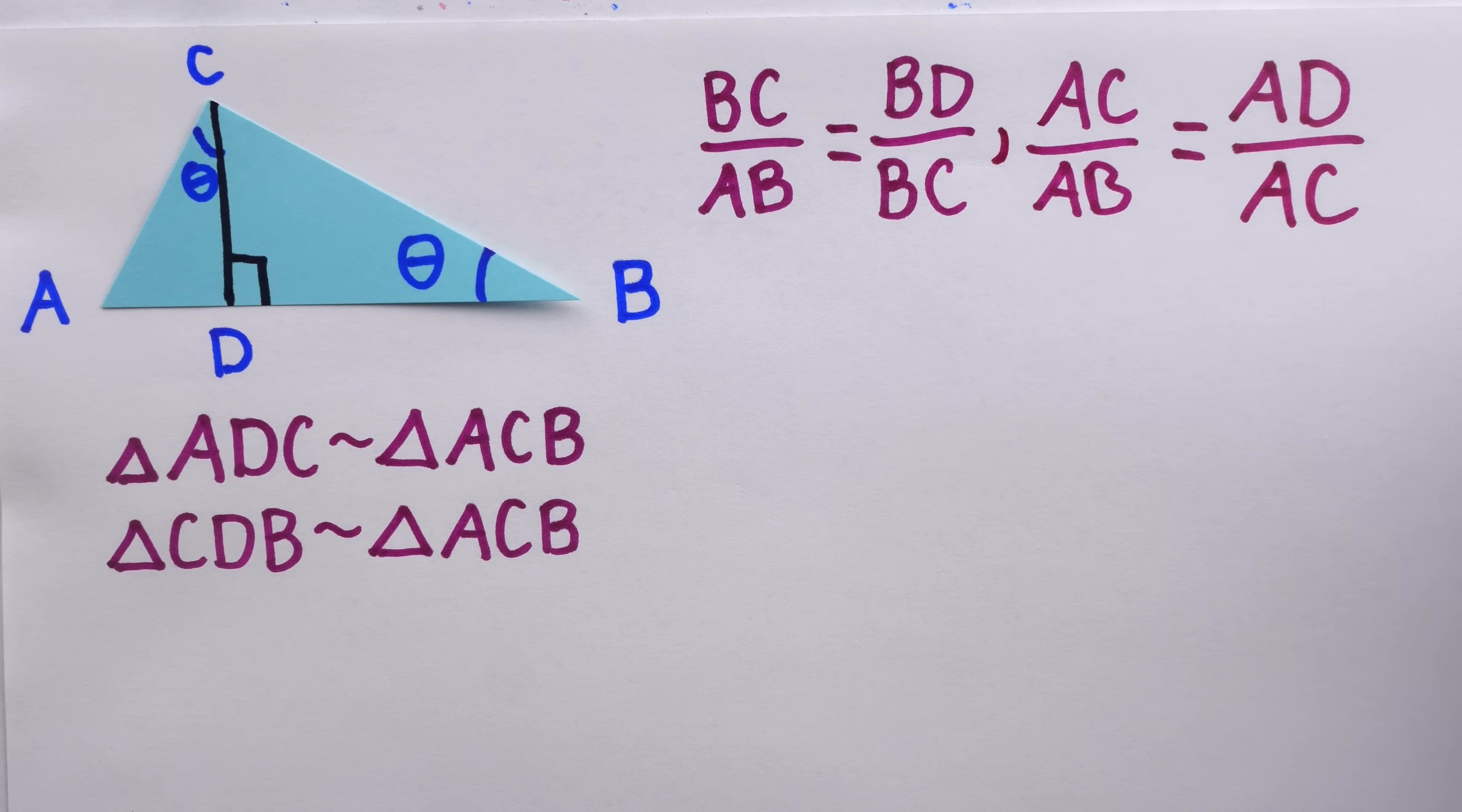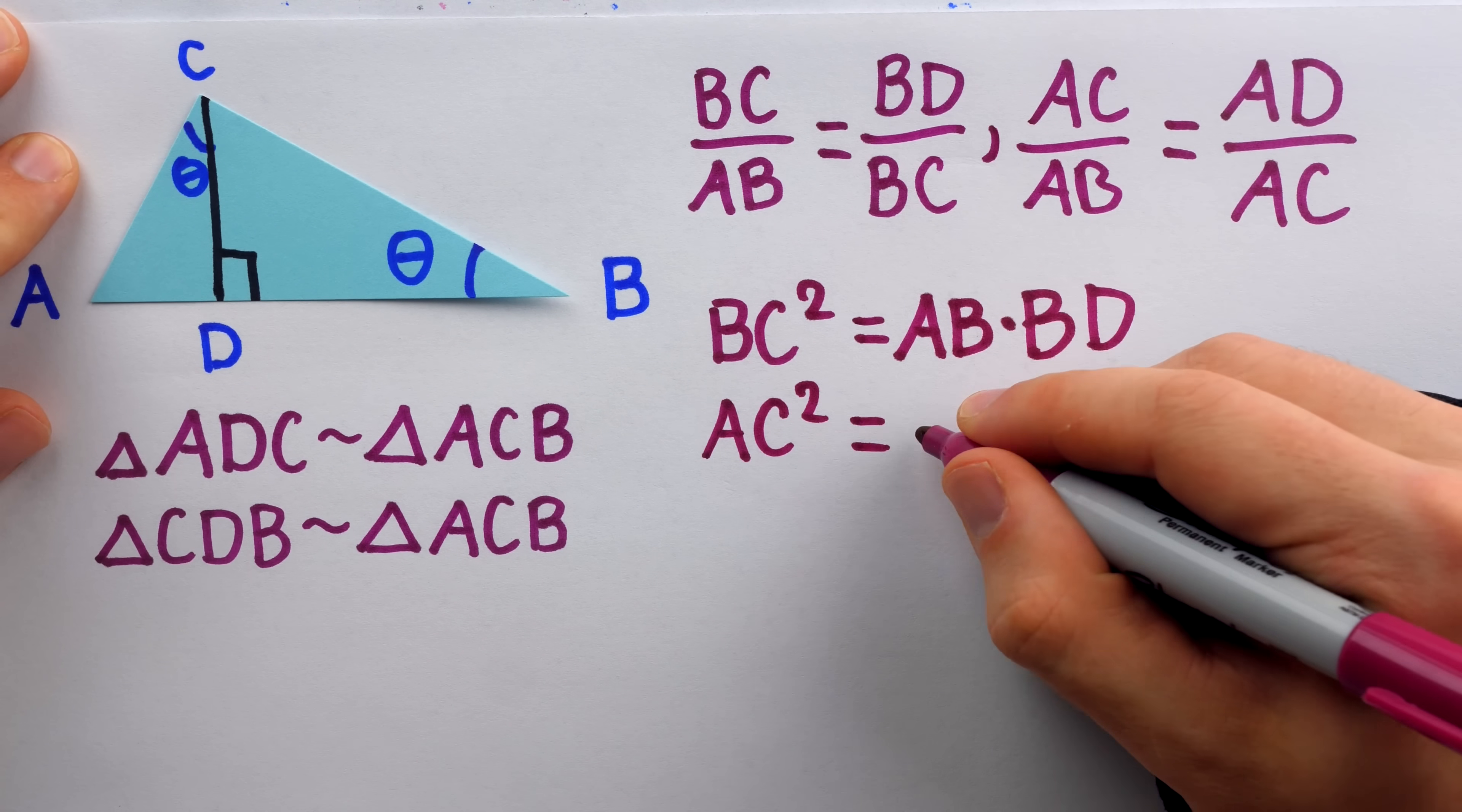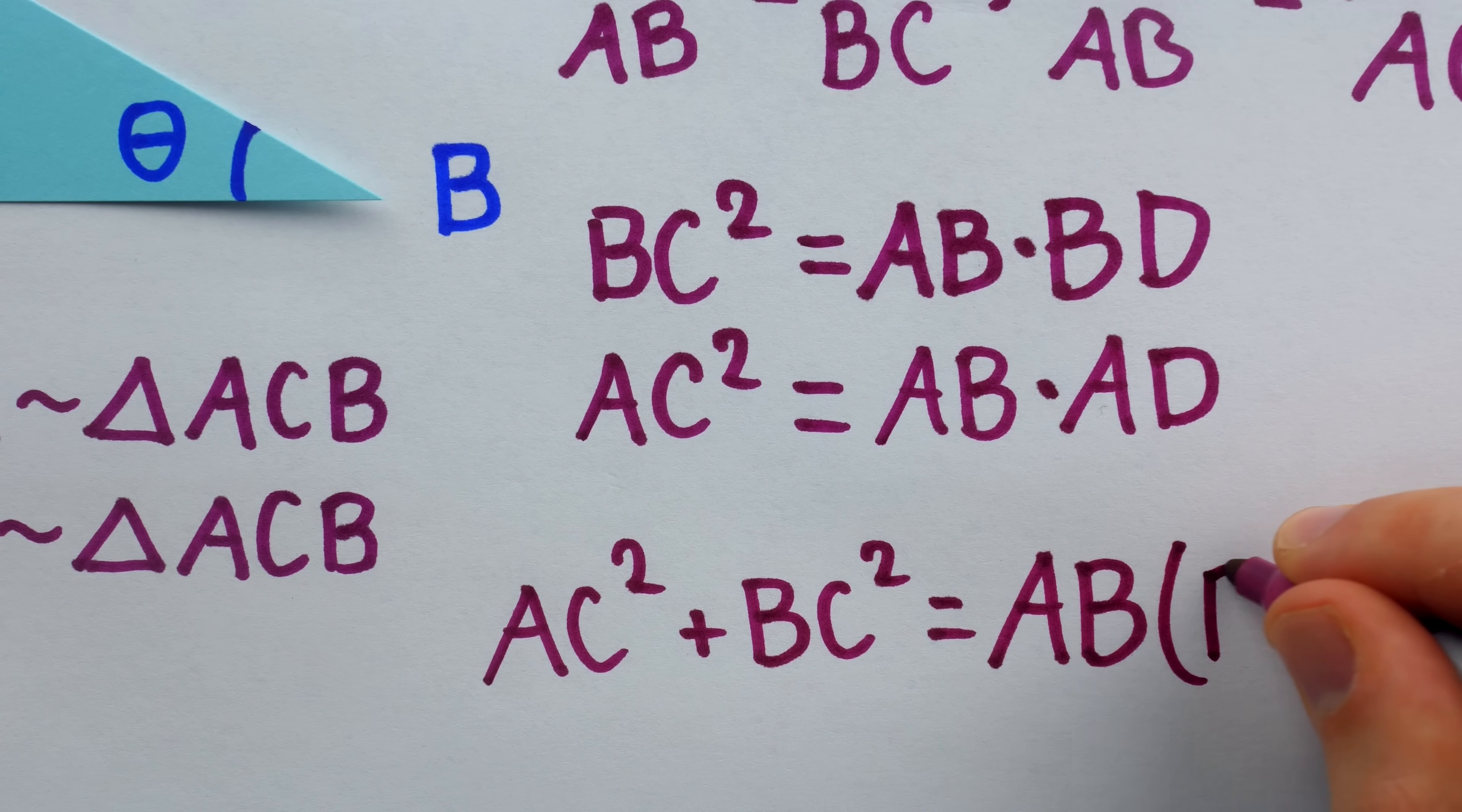So those are two proportions resulting from the similarity. I'm going to put a comma just to separate them. Now, we're nearly done. Take this equation, multiply both sides by BC. So on the left, we have BC squared, and on the right, we have AB times BD. Take this equation and multiply both sides by AC. So on the left, we have AC squared, and on the right, we have AB times AD. Now, we can add these two equations together.